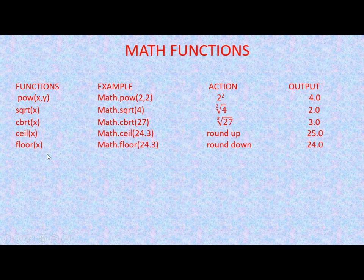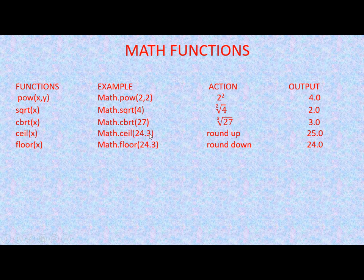The next function is floor(x). This returns the floor value, also called round down. If our example is Math.floor(24.3), this will return 24. Comparing ceil and floor: ceil returns the next closest integer greater than the given value, while floor returns the largest integer less than or equal to the given value — here that is 24.